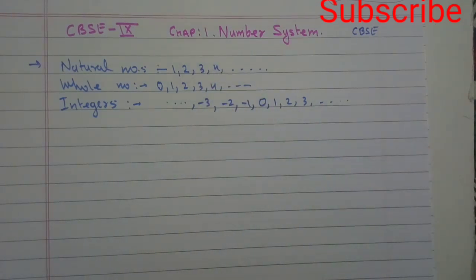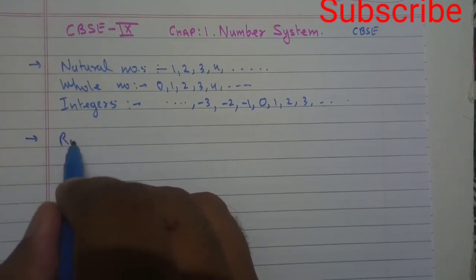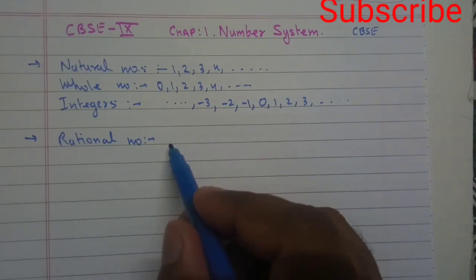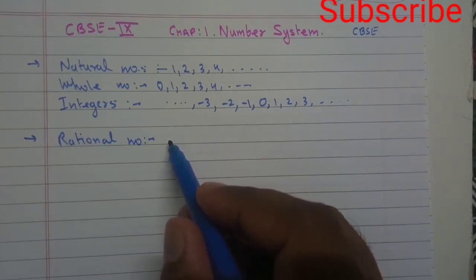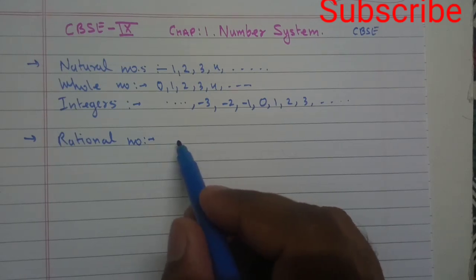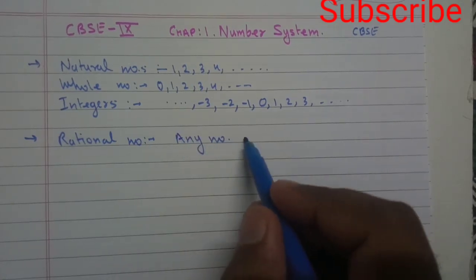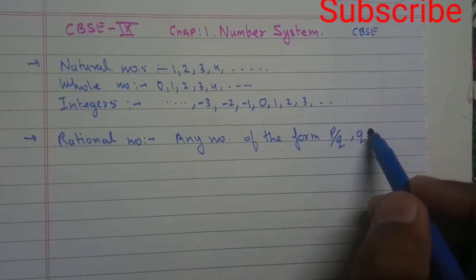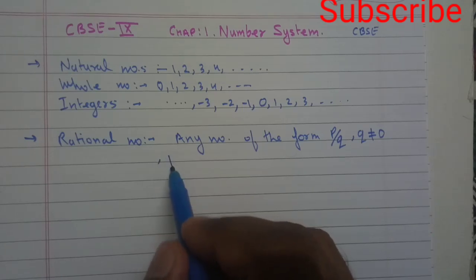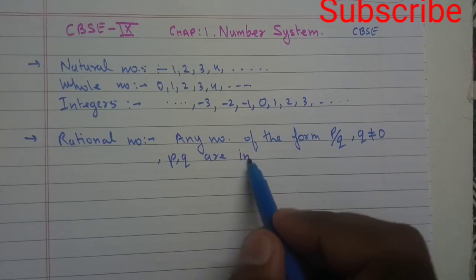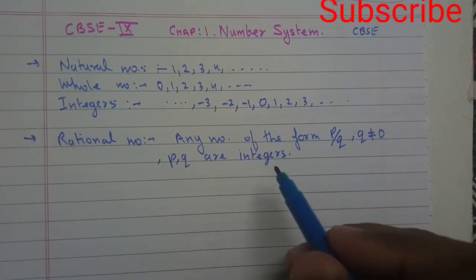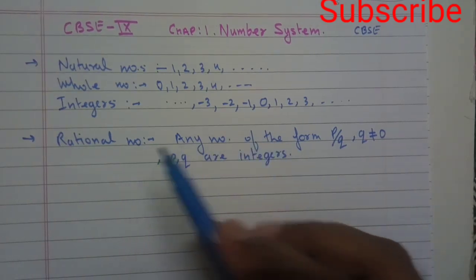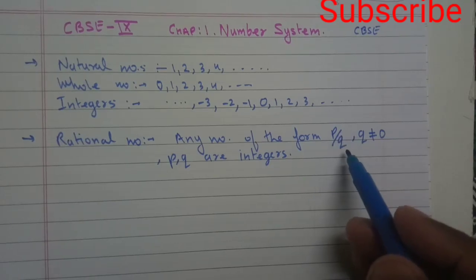Now the actual syllabus of your class starts from the term we call rational numbers. You have learned rational numbers in lower classes — in Class 8, Chapter 1. Any number of the form p by q, where q is not equal to zero and p and q are integers, is called a rational number. The denominator must not be zero.